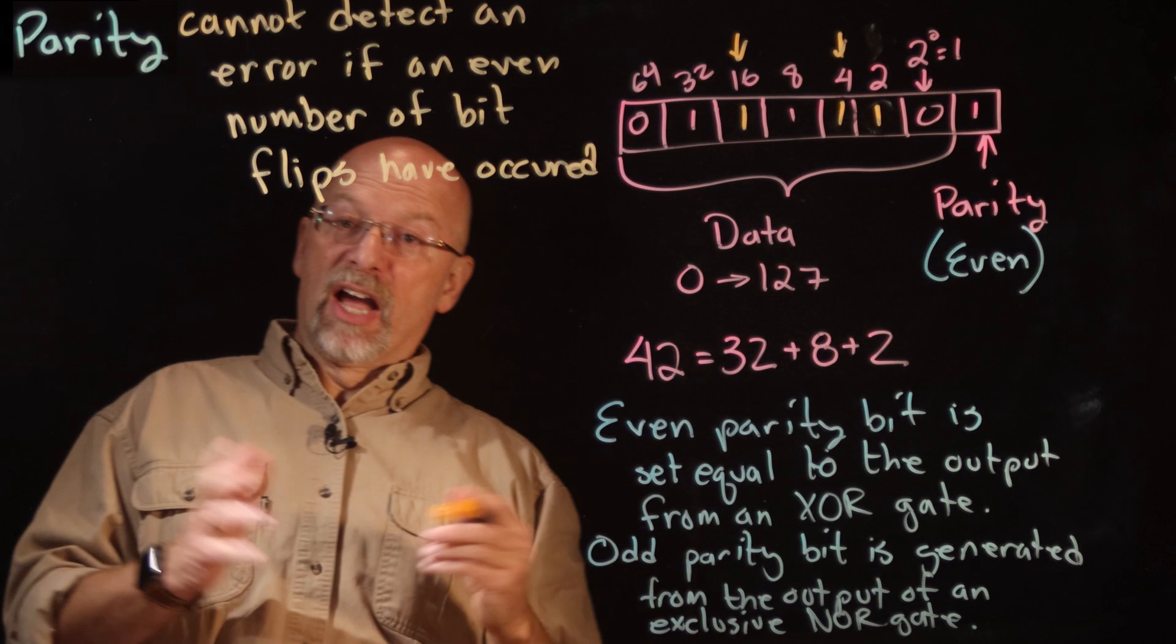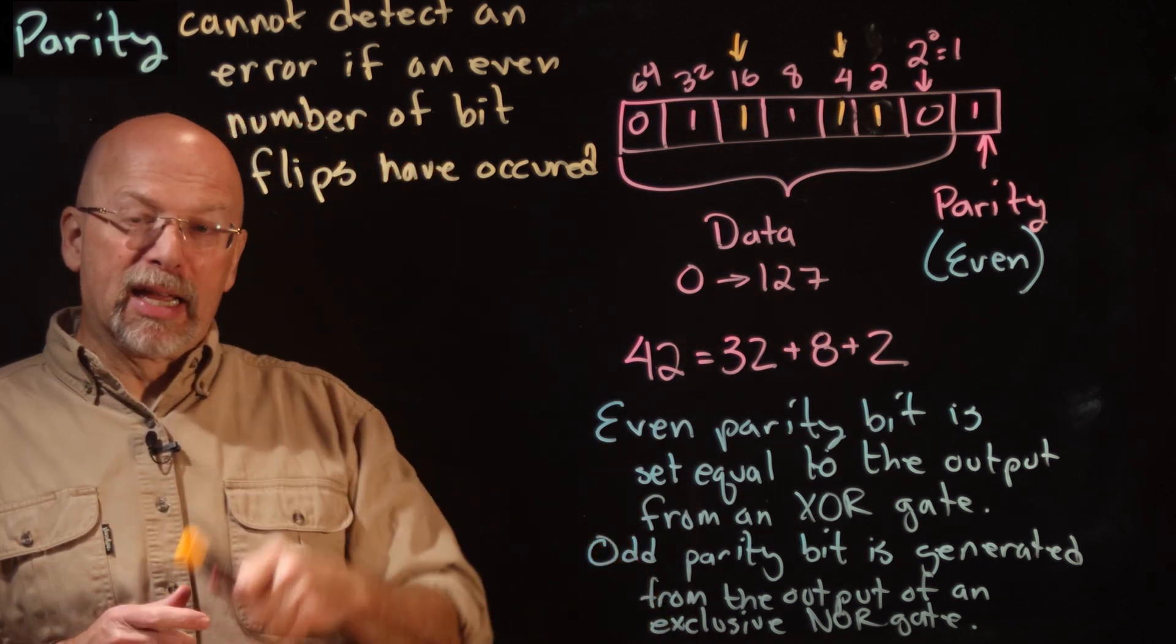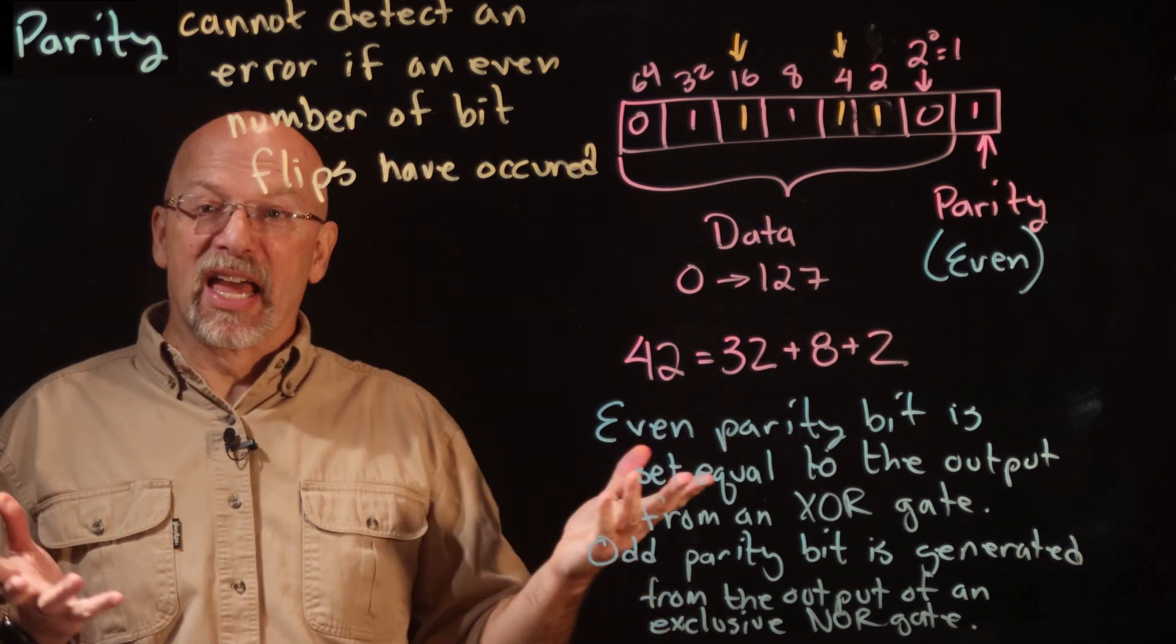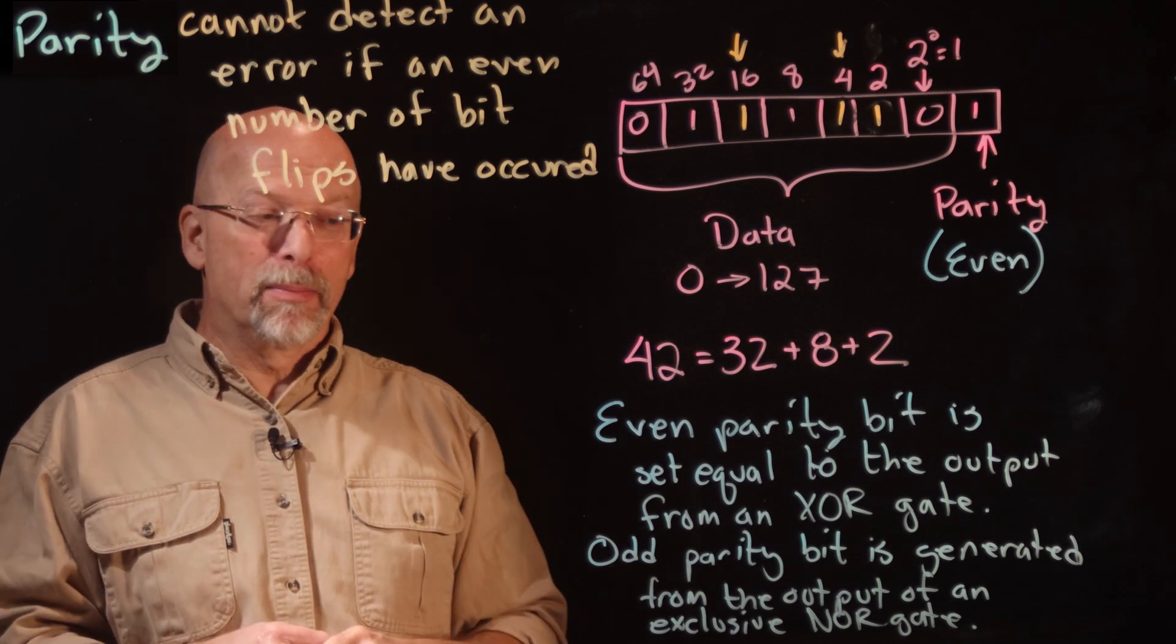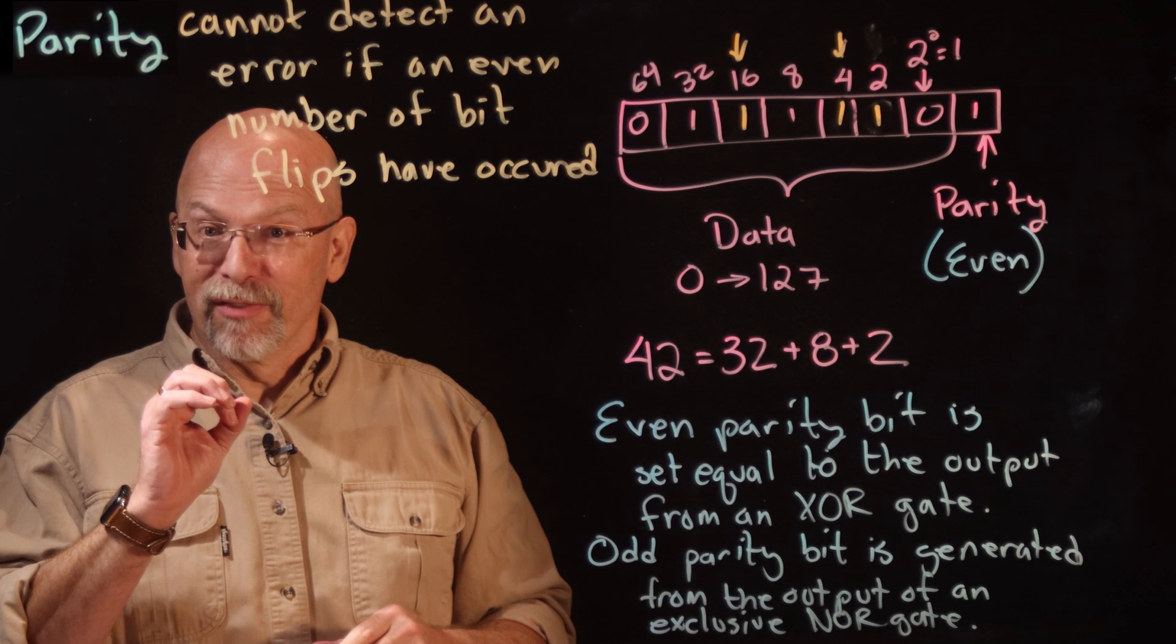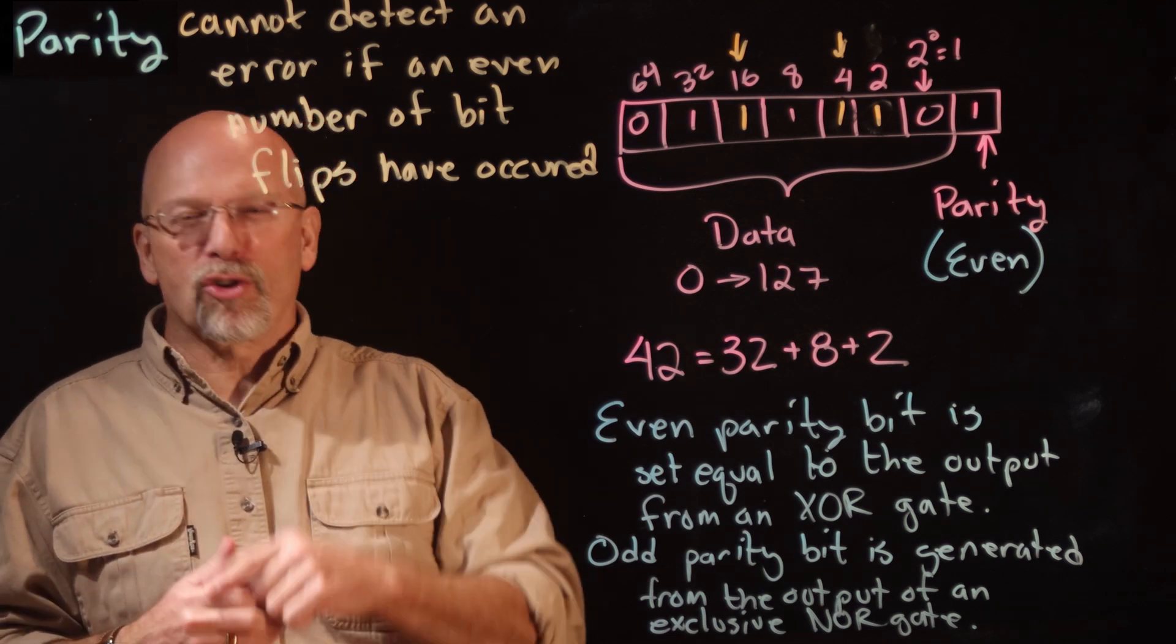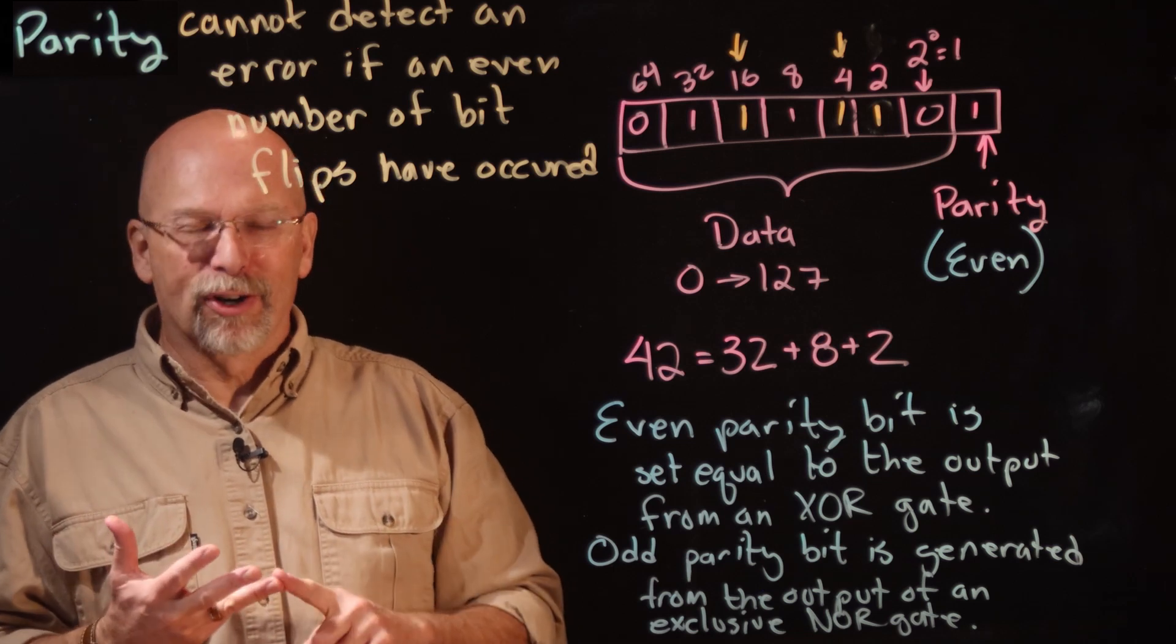You may think that parity is useless then because it won't be able to detect if we have an even number of bit flips. Tell you what, though - if you come back and look at how our discussion of a Hamming code works out, you'll see that parity is still incredibly important when it comes to error detection and even error correction.